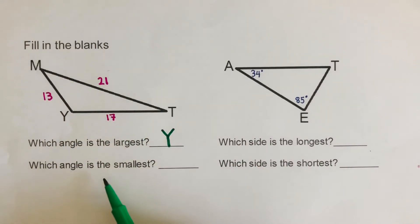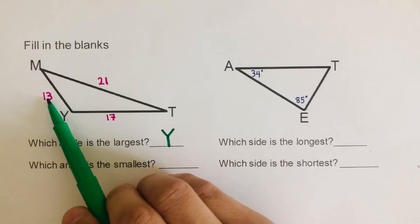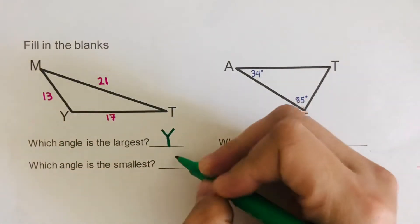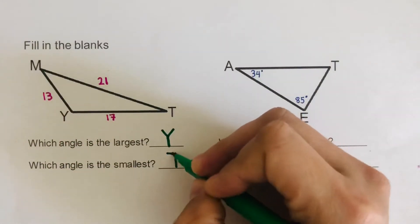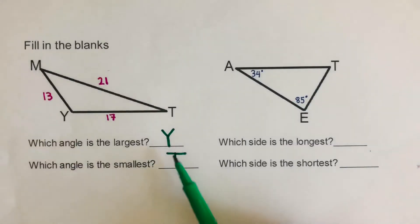Which angle is the smallest? The smallest angle will be opposite to the shortest side. So 13 is the shortest here, so it's angle T that will have the smallest angle. Did you get the same answer as this? Good. Perfect. Let's move on to the next one.